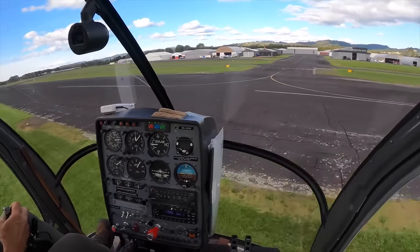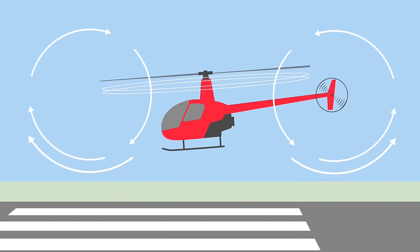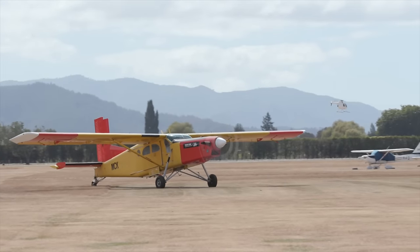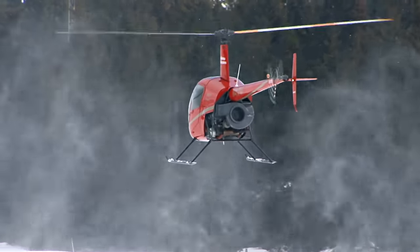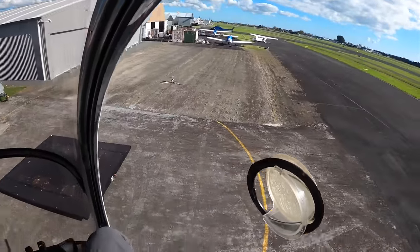With fixed-wing aircraft, also consider the closure rate and make sure you give a helicopter enough space. On the downwind, it can be hard to judge closing speeds of an aircraft on the same level. Understanding that a helicopter flies slower than fixed-wing goes a long way. Both fixed-wing and helicopter pilots need to be aware of the dangers of wake turbulence associated with helicopters. Fixed-wing pilots should avoid landing or taking off through an area where a helicopter has just hover-taxied, landed or taken off.